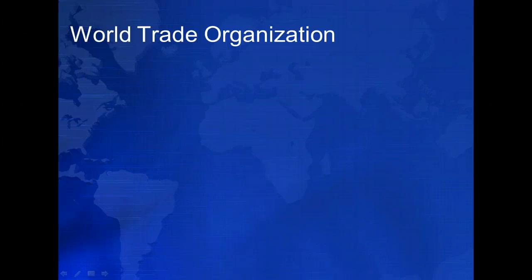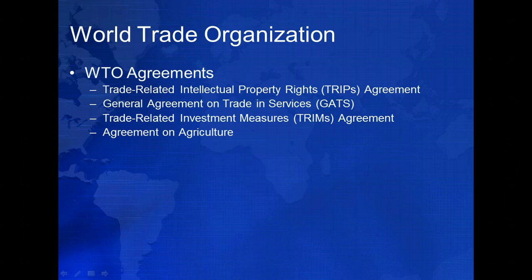The World Trade Organization actually encompasses a broad number of trade agreements and a dispute settlement mechanism intended to resolve trade disputes and prevent the outbreak of trade wars. At its inception, the WTO included the trade-related intellectual property rights agreement, the general agreement on trade and services, the trade-related investment measures agreement, and the agreement on agriculture. These are all explored in your text, so I won't address them here.